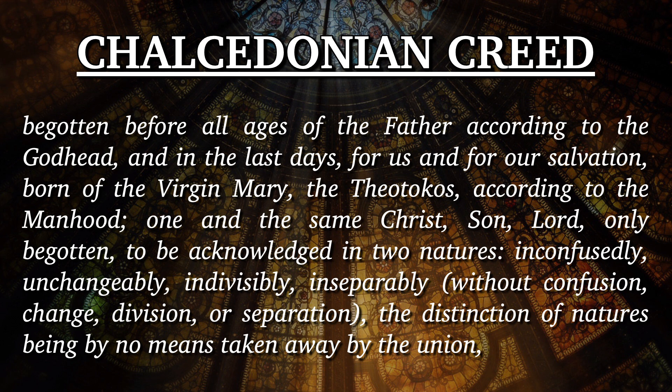Under Nestorianism, the Son of God is the divine person and the Son of Man is the human person—two natures constituting two persons, as opposed to the orthodox biblical position: two natures, truly God and truly man, united in one hypostasis, one hypostatic union, one person. 'One in the same Christ, Son, Lord, monogenes—only begotten'—they're picking up even a word going all the way back to the Council of Nicaea—'to be acknowledged in two natures.' One person of Christ to be acknowledged in two natures.